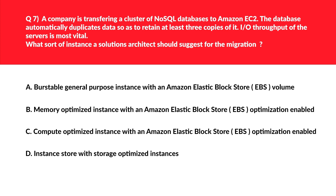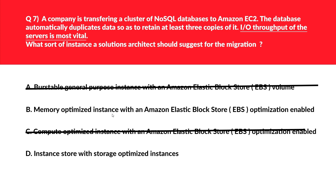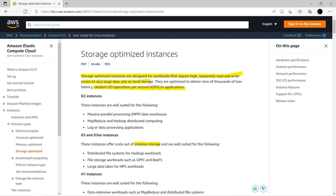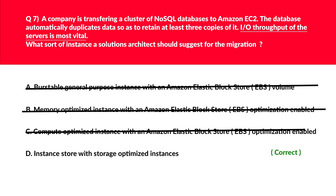This question is related to instance types. Options A and C — burstable general purpose and compute optimized instances — are meant for CPU-intensive workloads, but we need IO throughput-intensive as per the question, so A and C are incorrect. Option B, memory optimized instances, has no connection with IO throughput and is also incorrect. Quick tip: whenever you see keywords like 'IO throughput,' instance store should come to mind. Per the official documentation, storage optimized instances are designed for workloads requiring high sequential read and write access to large datasets with high IOPS. Hence option D is the correct answer.